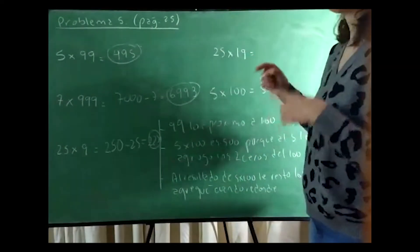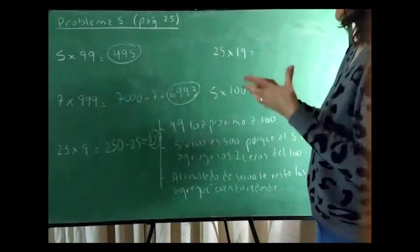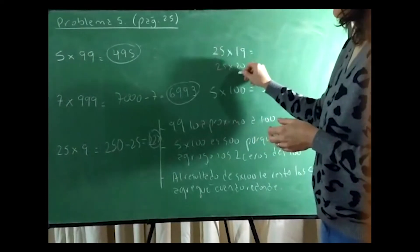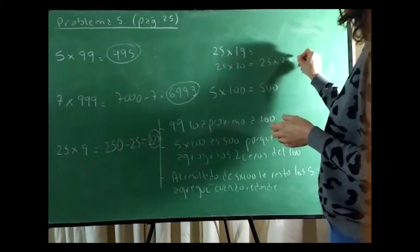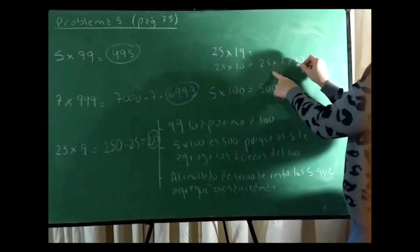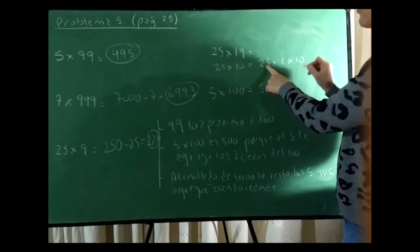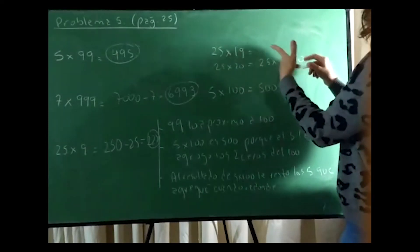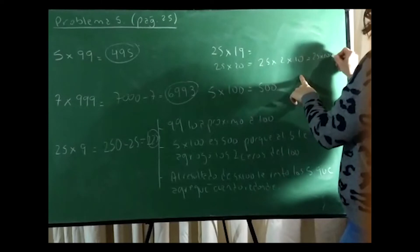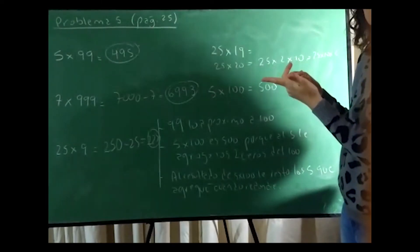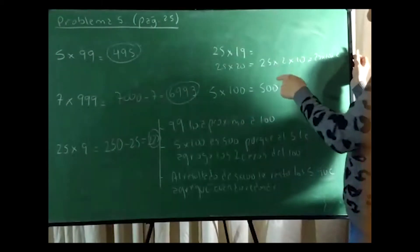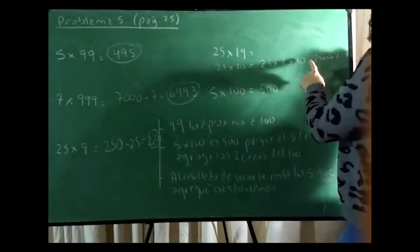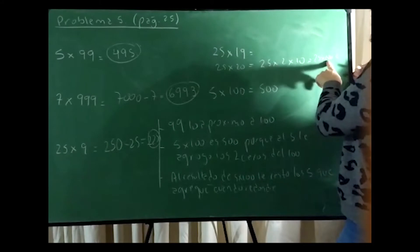Let's go with this one. Here I already have 19. I approximate 19 to 20, giving me 25×20. And here there's something interesting to see. The 20 is equivalent to 2×10. Today we said that when we multiplied by 10, we added this 0 to the number we were multiplying. So I took out the 10, I disassembled the 20 into 2×10. But let's change the order a bit. Let's do 25×10×2.